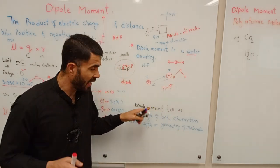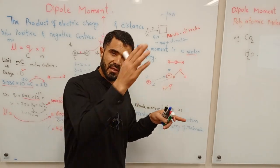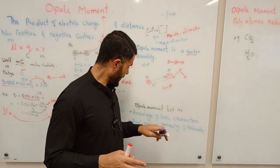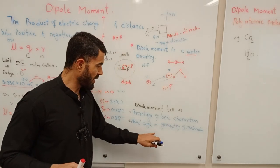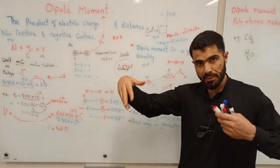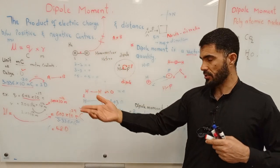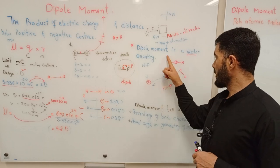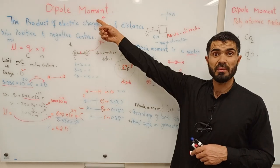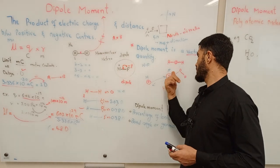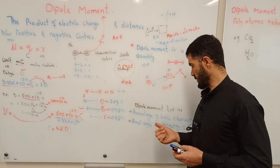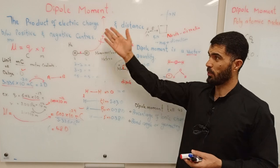Second, dipole moment tells us the bond angle geometry of a molecule. In the past, there was an idea that water has a linear shape, but with the help of dipole moment we came to know that water is actually bent. So dipole moment tells us both the percentage of ionic character and the geometry of a molecule.